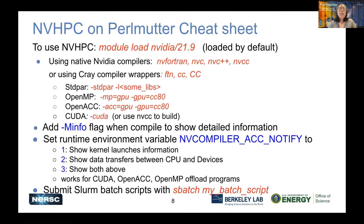Cheat sheet: module load NVIDIA, although it's loaded by default. You can compile with native compilers NVFortran, NVC, NVC++, or CUDA NVCC. You can also use Cray compiler wrappers, especially with MPI — FTN, cc, and CC for Fortran, C, and C++ respectively. For standard parallelism add -stdpar and library flags; for OpenMP add -mp=gpu -gpu=cc80 (the A100 GPU on Perlmutter); for OpenACC add -acc and -gpu=cc80. For CUDA, add -cuda. These languages can be mixed in the same application code.